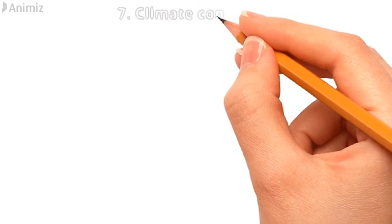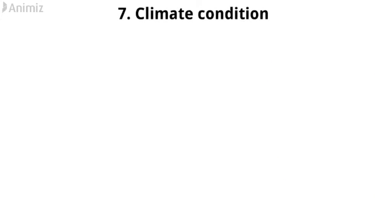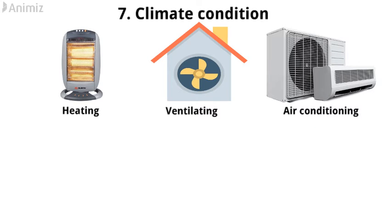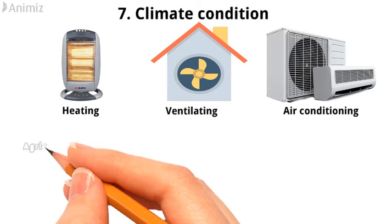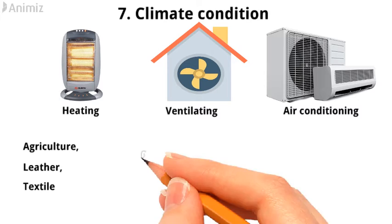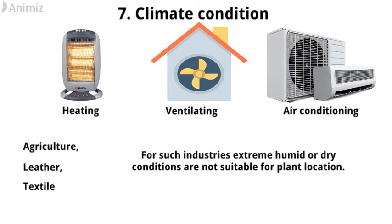Number 7: Climate condition. With the development of heating, ventilating, and air conditioning, climate of the region does not present much problem for many industries. But for industries such as agriculture, leather, and textile, climate is an influencing factor. For such industries, extreme humid or dry conditions are not suitable for plant location.